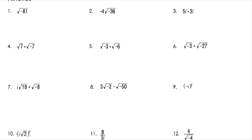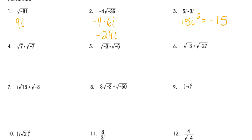For number 1, square root of negative 81 — I see the negative right off the bat, so I'm going to put an i, and then the square root of 81 is 9. For number 2, we've got negative 4 times the square root of negative 36, which would be 6i. So when I combine those, I get negative 24. For number 3, we're multiplying two imaginaries, so I'm going to have 15i squared, and we know i squared is negative 1, so we would have negative 15.